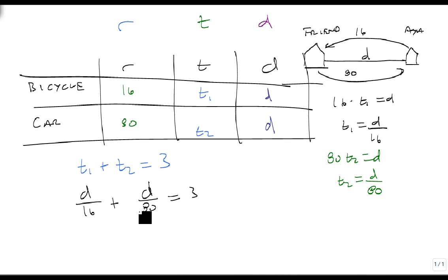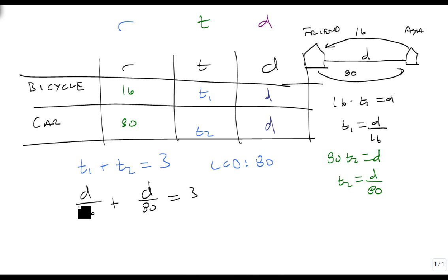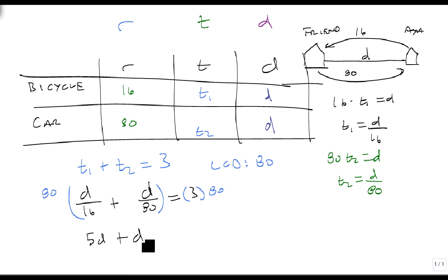16 times 5 is 80, so our lowest common denominator is 80. Rather than rewriting fractions, let's just multiply everything by 80. 80 divided by 16 is 5, 80 divided by 80 is 1, and 3 times 80 is 240. So we get 5D plus D equals 240, which means 6D equals 240.